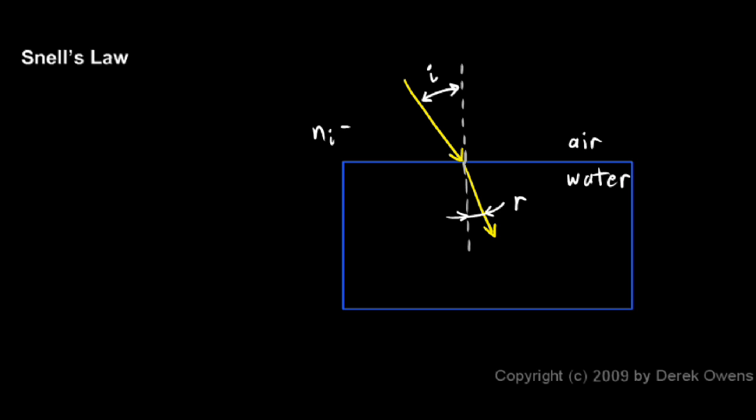And the index of refraction of air is 1.00. So this I means we're referring to the index of refraction for the material where the incident ray is, and the incident ray is in air, so NI in this problem is the index of refraction for air.